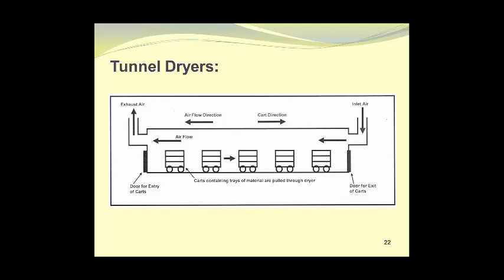Here you see a schematic diagram of a tunnel dryer. The door for the entry of the carts is at the left-hand side of the diagram. The carts containing the trays of material are pulled through the dryer in much the same manner as cars passing through an automated car wash. We see that the air flow is directed in the opposite direction to which the carts are traveling. Once the carts reach the end of the dryer, the door for the exit of the carts will open and the carts are pulled out, then unstacked and restacked again for future use.